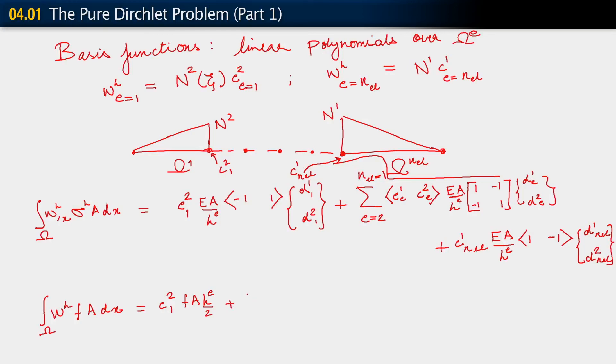From the other elements, we will get a contribution which has the same form as our main sum over all the elements when we were doing the Dirichlet-Neumann problem. This is sum going from e equals 2 to n_el minus 1. And here in this sum, the contributions from the degrees of freedom for weighting functions are c_1^e, c_2^e, F_A h_e over 2, F_A h_e over 2. This thing now would be multiplied by 1 and 1.